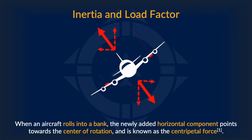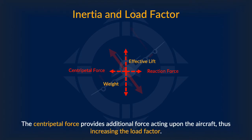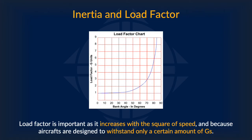When an aircraft rolls into a bank, the newly added horizontal component points towards the center of rotation and is known as the centripetal force. This also creates a reaction force in the opposite direction. The centripetal force provides additional force acting upon the aircraft, thus increasing the load factor. This reaction is generated by Newton's third law — that every action must have an equal and opposite reaction. The load factor is important as it increases with the square of speed, and aircraft are designed to only withstand a certain number of g's, so pilots must be careful not to increase the load factor too much.